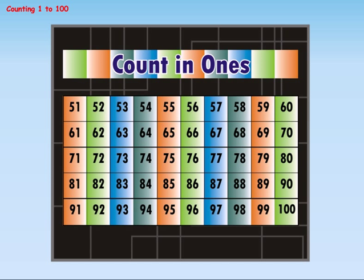Count in ones: 51, 52, 53, 54, 55, 56, 57, 58, 59, 60, 61, 62, 63, 64, 65, 66, 67, 68, 69, 70, 71, 72, 73, 74, 75, 76, 77, 78, 79, 80, 81, 82, 83, 84, 85, 86, 87, 88, 89, 90, 91, 92, 93, 94, 95, 96, 97, 98, 99, 100.